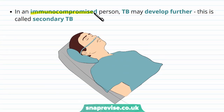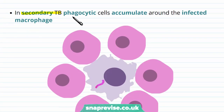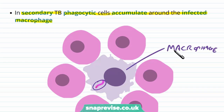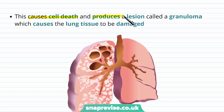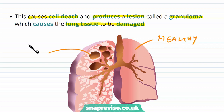However, if that person becomes immunocompromised, or if the TB infects someone who's already immunocompromised, the TB can develop further and become more dangerous — this is called secondary TB. Immunocompromised people tend to have very low activity immune systems, or may be on medication that is inhibiting their immune system. In secondary TB, the phagocytic cells begin to accumulate around the infected macrophages. Other phagocytes start surrounding and digesting these macrophages, causing their cell death and producing lesions known as granulomas. Many granulomas can build up in the lungs, and their chemical nature means lung tissue starts to be damaged and broken down.